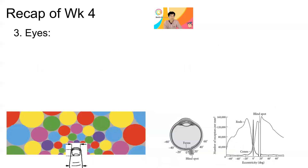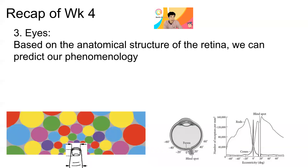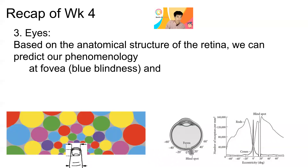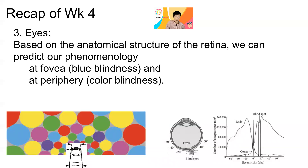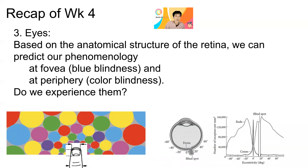In the third part of the week four lecture, we started to introduce the structure of the eyes. Based on the anatomical structure of the retina, we can predict that our phenomenology should be such that the fovea would be blue-blind, and also at the periphery it should be color-blind. I made a couple of demonstrations and asked you to see whether these predictions would be met according to your experience, using aftereffects for the blue-blindness and also color-blindness on the left side of the demonstration, and we'll revisit that again.